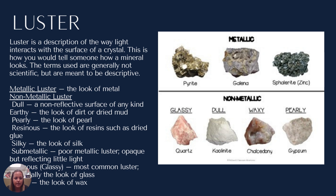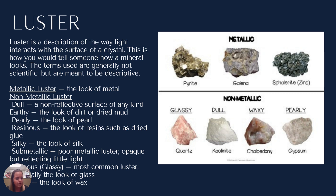If you don't think it looks like a metal and it looks non-metallic, we have a bunch of other terms we can refer to. They include dull, earthy, pearly, resinous, silky, sub-metallic, vitreous or glassy, and waxy. A lot of them are going to be hard to tell the difference between, especially pearly, resinous, and silky. I generally only give you a couple to choose from — those being glassy, dull, waxy, and sometimes resinous. Resinous looks like dried glue, pearly looks like a pearl, and silky looks like silk.